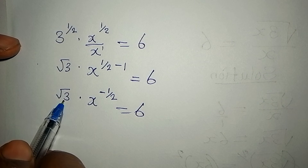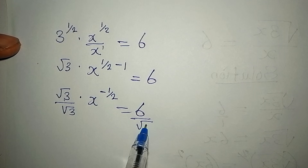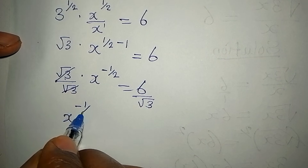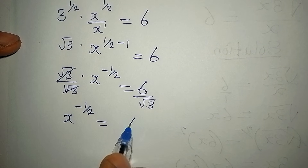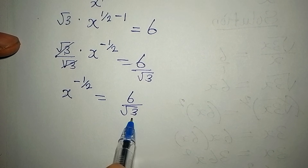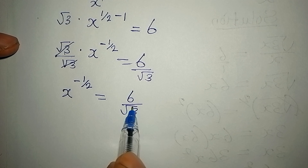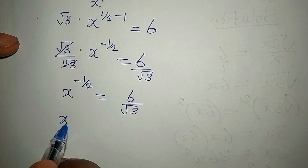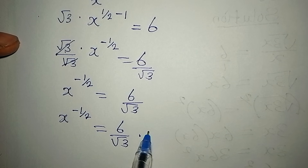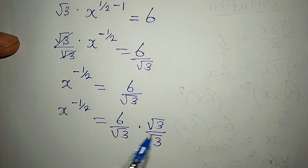Since we're multiplying by root 3, we divide both sides by root 3, so x to the power of negative 1/2 equals 6 over square root of 3. Since root 3 is irrational and should not remain in the denominator, we rationalize the right-hand side by multiplying by root 3 over root 3.